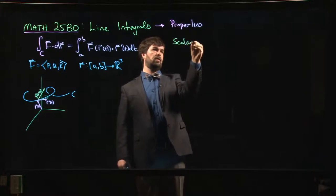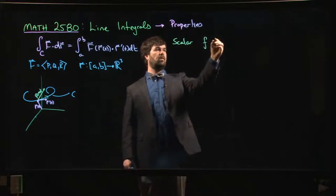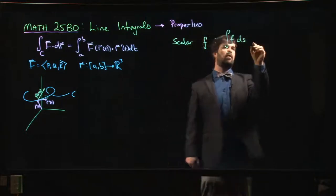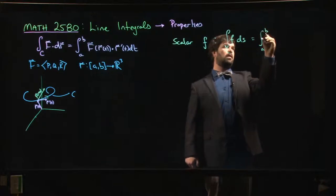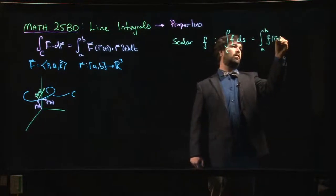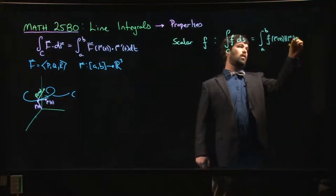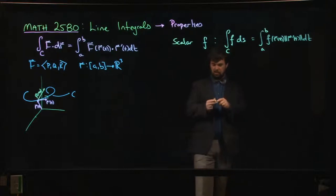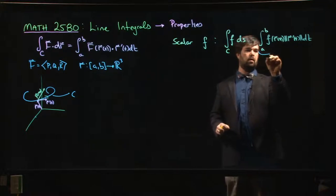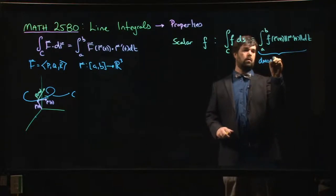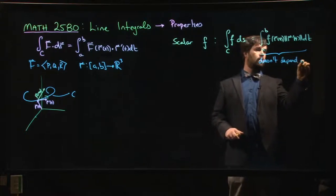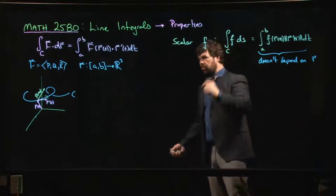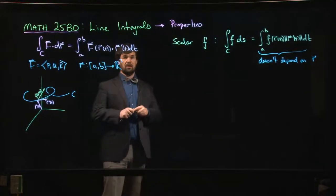So if you're dealing with a scalar function f and you compute the integral ∫_C f ds, evaluated as the integral from a to b of f(r(t)) times the magnitude of r'(t) dt, it turns out this integral is completely independent of parameterization. It doesn't depend on the choice of r, as long as r is some parameterization whose image is the curve C.